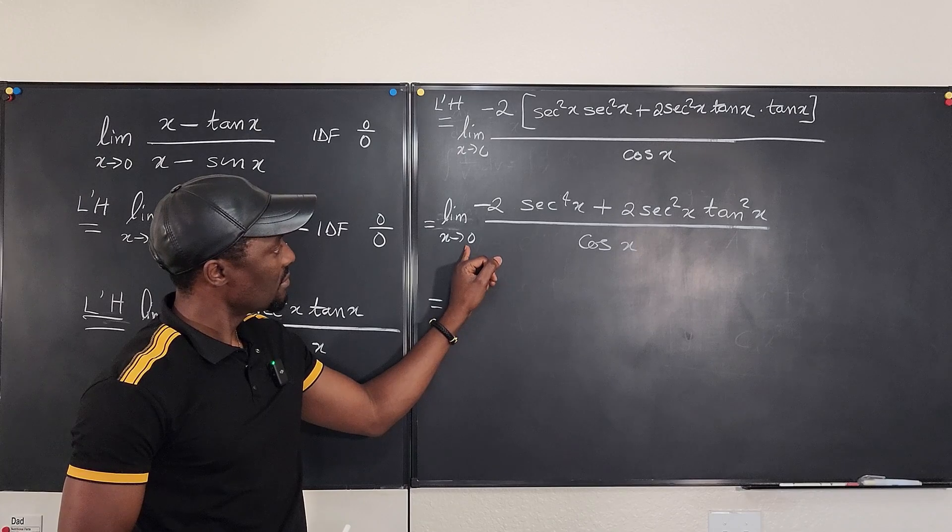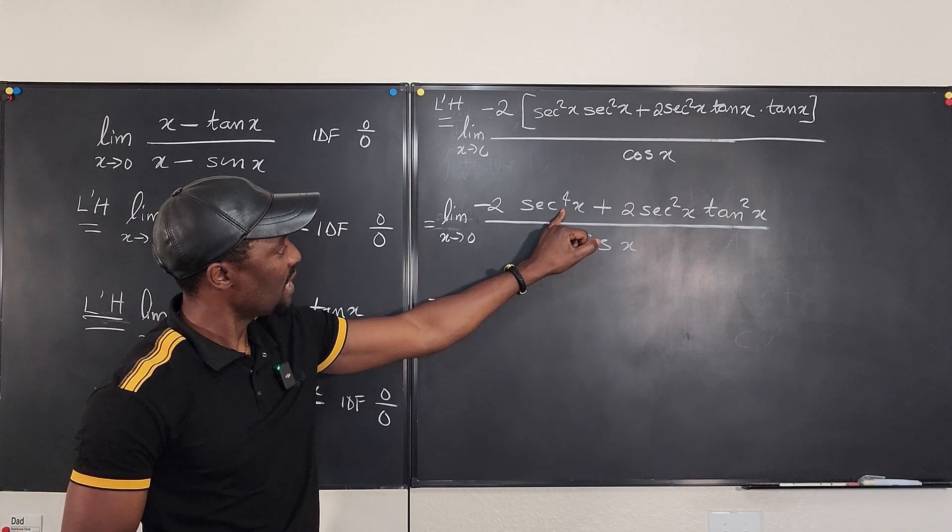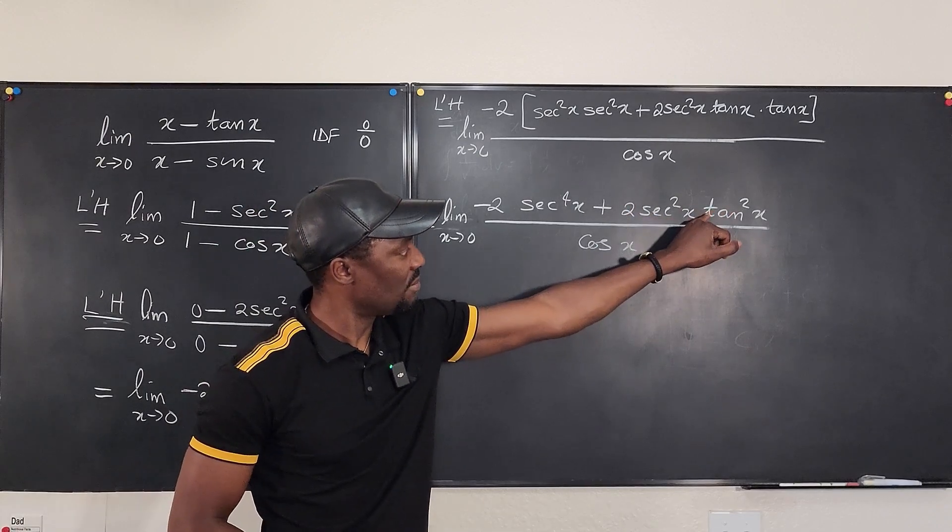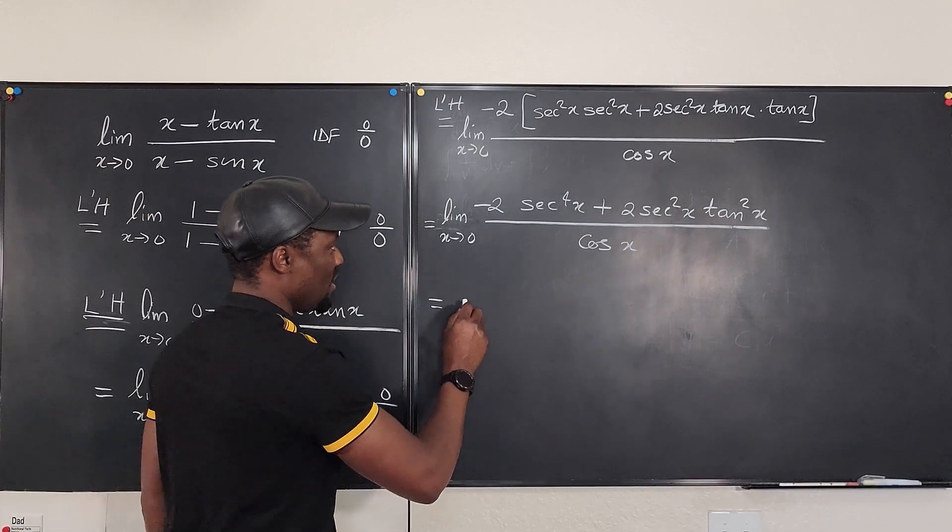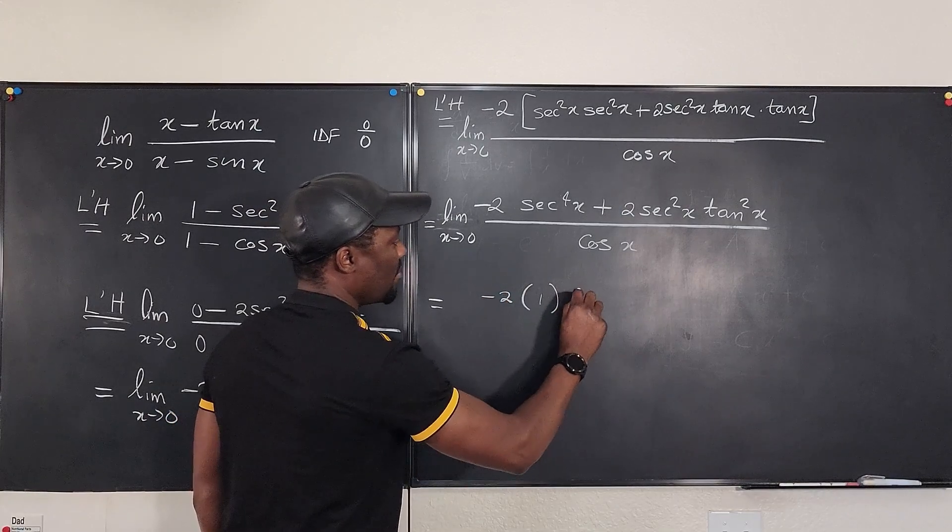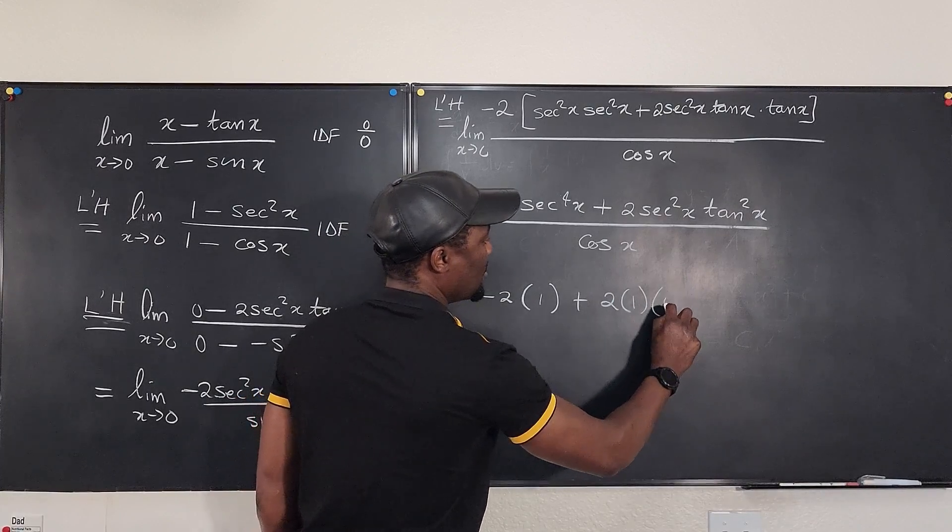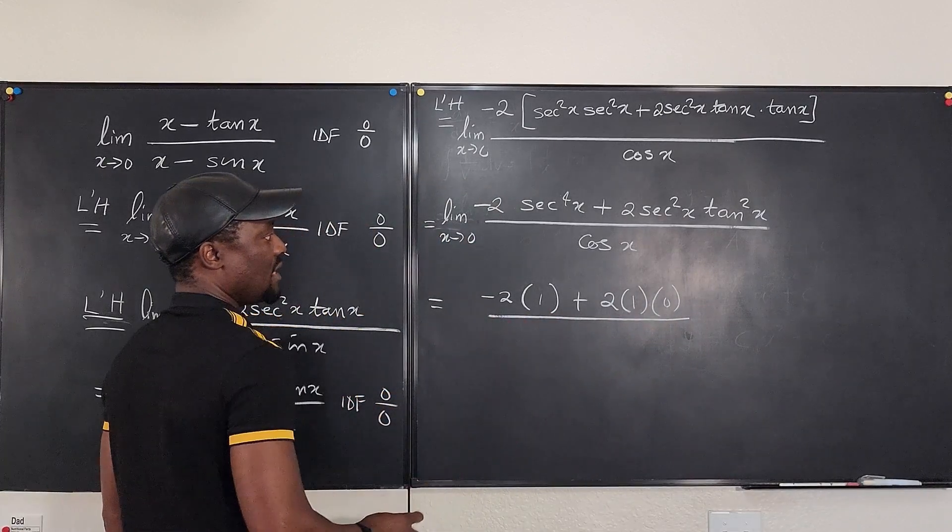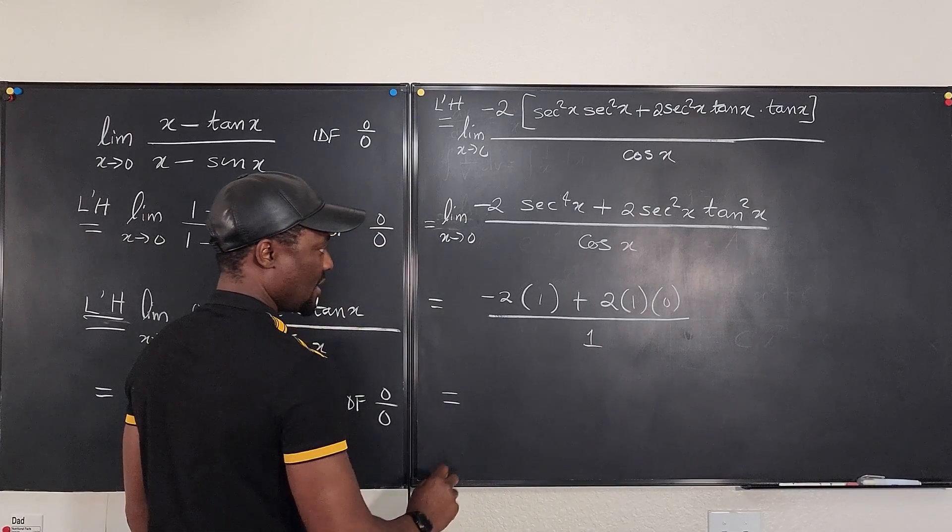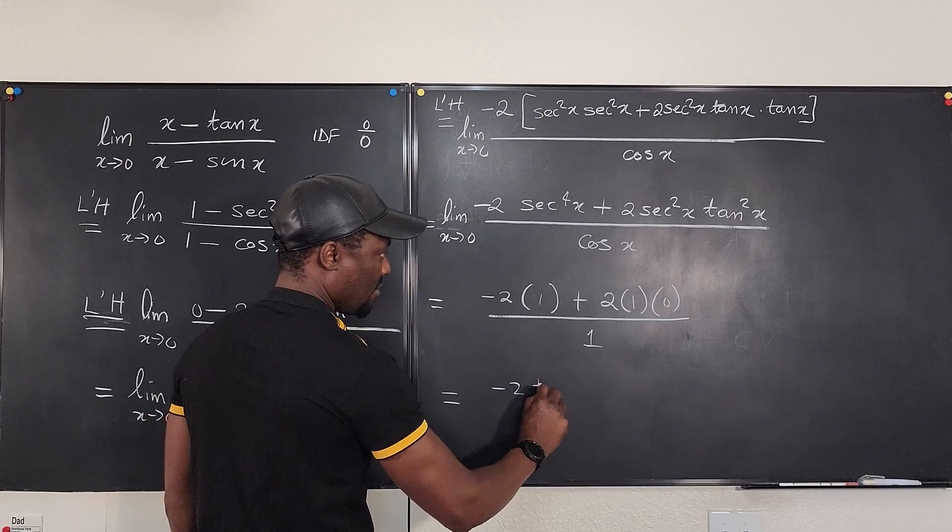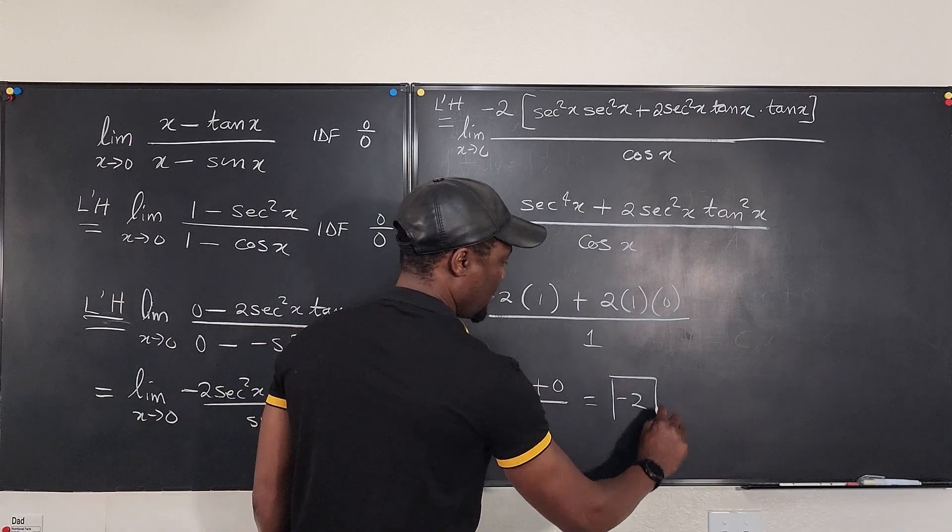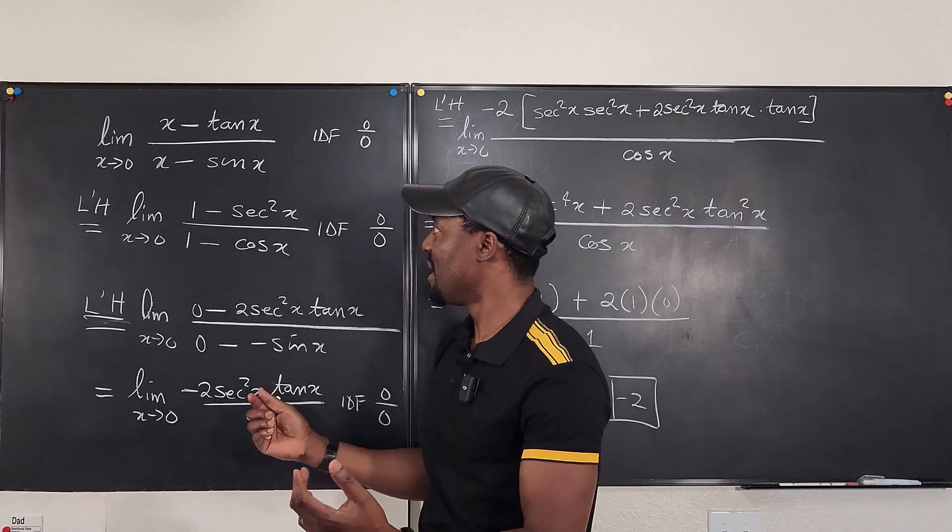If we plug in 0 here, what do we have? We get 1. If we plug in 0 here, this disappears because of the presence of tan. So this is going to be equal to negative 2 multiplied by 1 plus 2 times 1 times 0. And this gives us the cosine of 0, which is 1. And it looks like our answer is going to be negative 2 plus 0 over 1, which is negative 2. So this limit is basically minus 2.